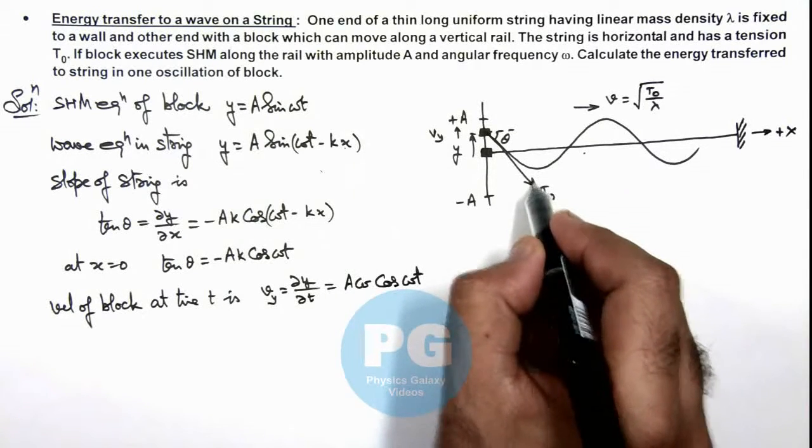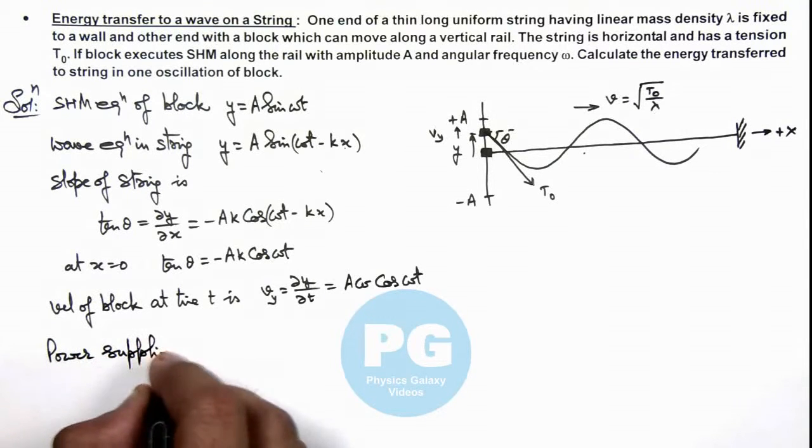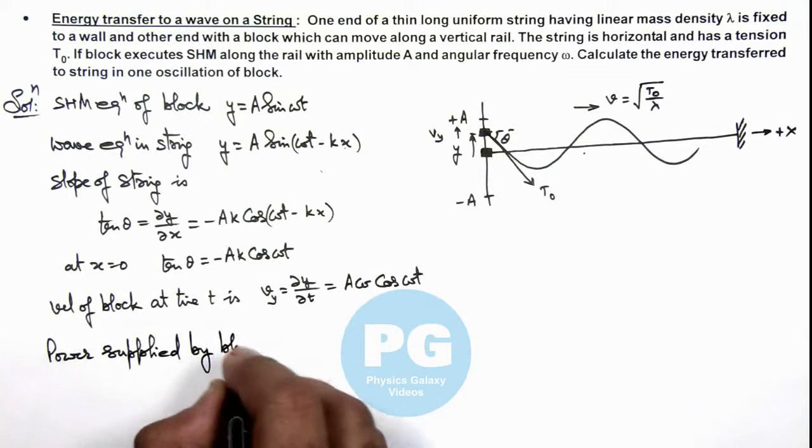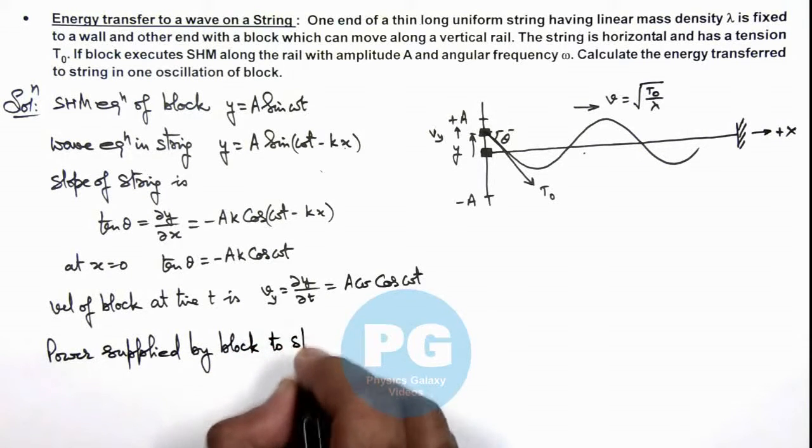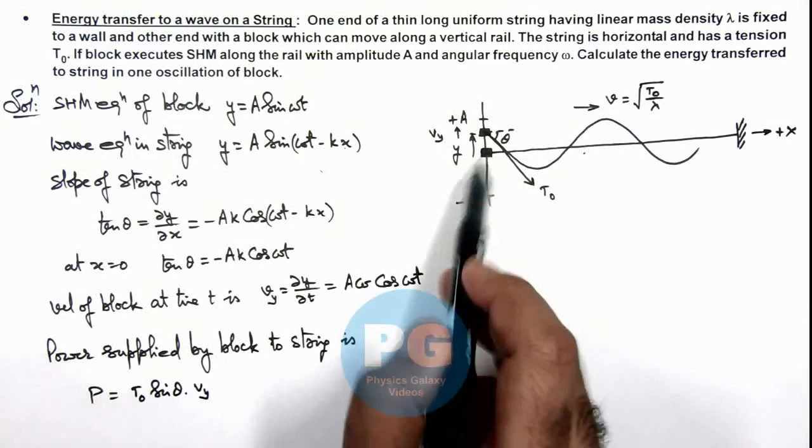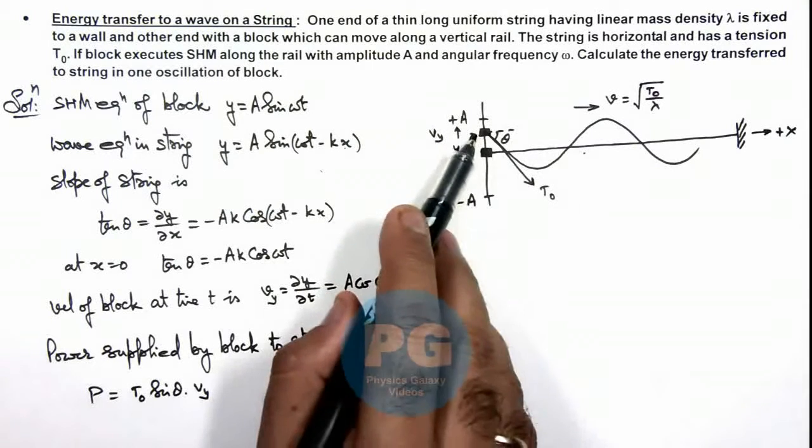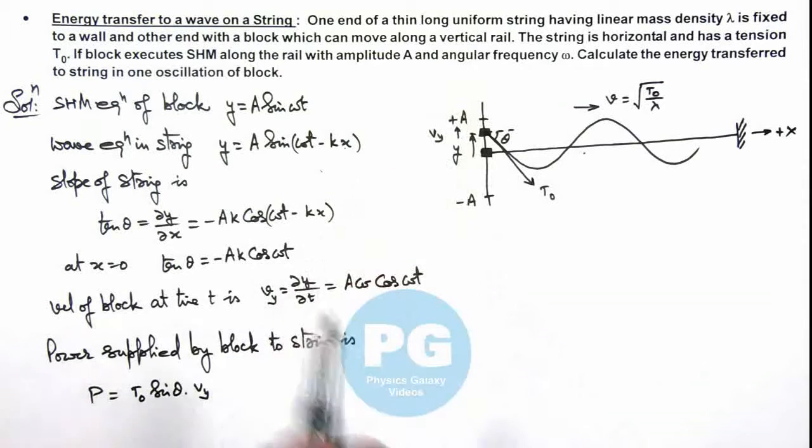Now in this situation if T₀ is the tension in the string, we can directly write down the power supplied by the block to the string. This power we can write as T₀ sin θ multiplied by v_y, as T₀ cos θ is perpendicular to its motion and T₀ sin θ is the force which is extracting energy from the block to the string. For small θ we can approximate it as T₀ tan θ multiplied by v_y.